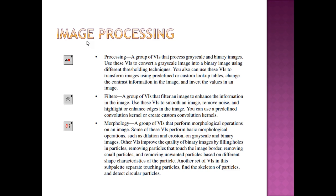The image processing functions include a group of VIs that process grayscale and binary images. We use these VIs to convert a grayscale image into a binary image using different threshold techniques, transform images using predefined or custom lookup tables, change the contrast information in the image, and invert the values in an image. Filters is a group of VIs that filter an image to enhance the information in it. We use these VIs to smooth an image, remove noise, and highlight or enhance edges. You can use a predefined convolution kernel or create custom convolution kernels.